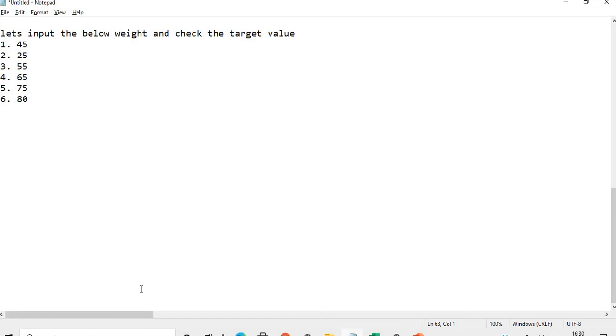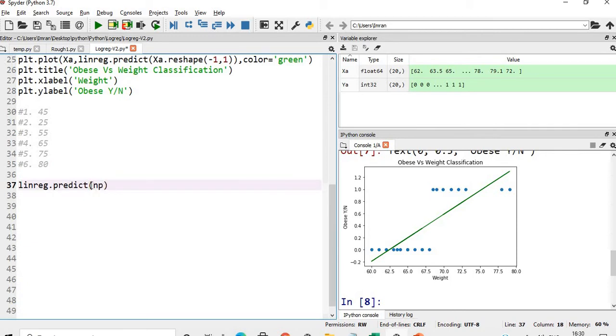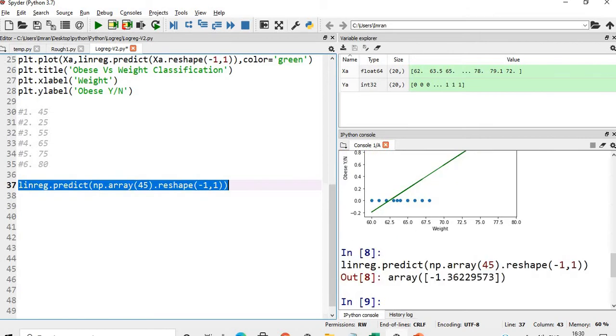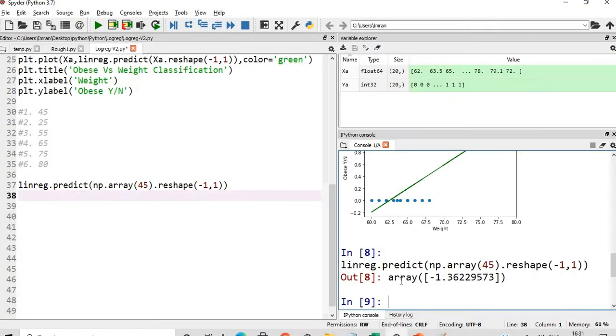After this, we'll see for what weight I will get the threshold value. Let's input these weights and check the target value. For weight 45, the value is minus 1.36. If you look at the equation of the line, this model will come down and touch my y-axis here, which is around minus 0.3 in this case. This is one reason we will not use linear regression.